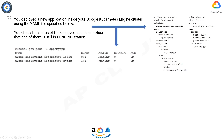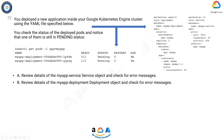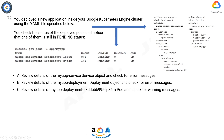Option A: Review details of the my-app-service service object and check for error messages. Option B: Review details of the my-app-deployment deployment object and check for error messages. Option C: Review details of my-app-deployment-58-ddbbb995-lp86 pod and check for warning messages.